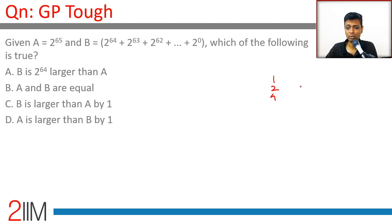1 + 2 + 4 is 7, 1 + 2 + 4 + 8 is 15, 1 + 2 + 4 + 8 + 16 is 31. This is 2^3 - 1, this is 2^4 - 1, this is 2^5 - 1.